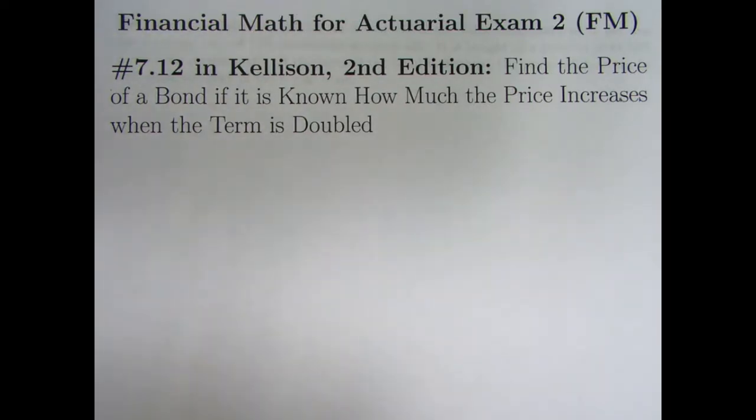In this video we're continuing our bond pricing problems with the big four formulas. We're going to look at problem 7.12 from Kellison. We'll be finding the price of a bond if it is known how much the price increases when the term is doubled.